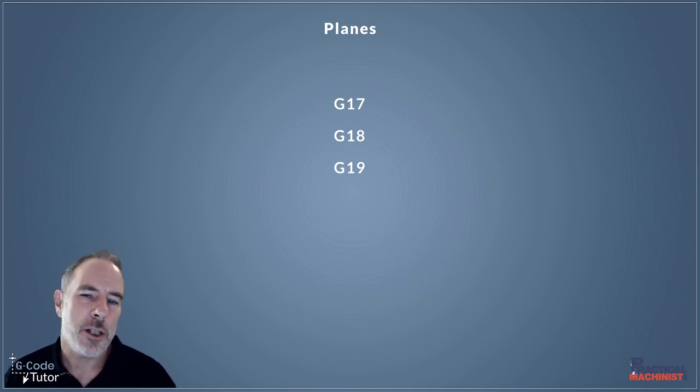We can also use planes when working on lathes as well. The Gcodes we use to select each individual plane are G17, G18, and G19. What planes do those Gcodes represent?